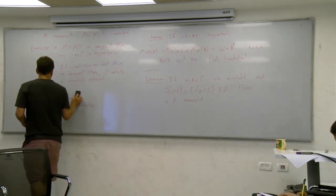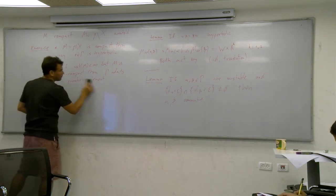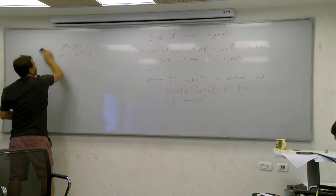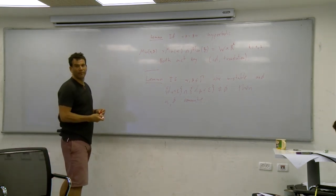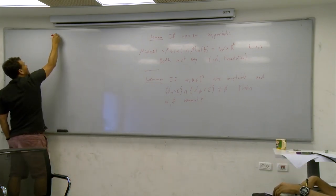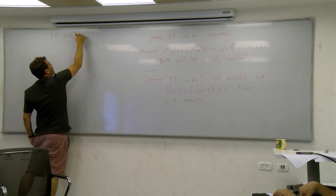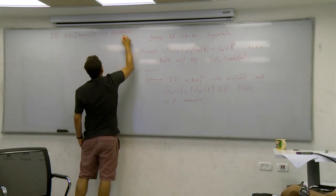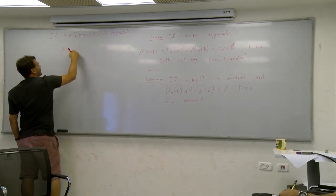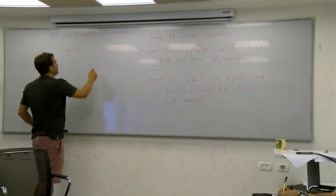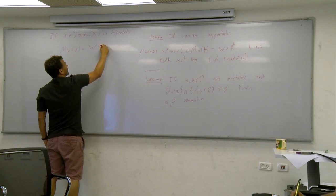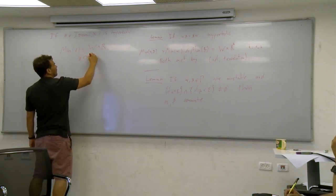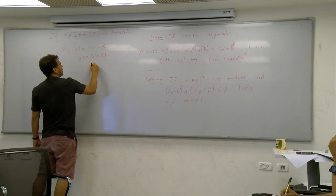Why? Recall how a hyperbolic element acts. If gamma is hyperbolic, then Min(gamma) is a totally geodesic submanifold — a union of geodesics — of the form W × R. Gamma acts on W × R by identity on W and translation on R. This R is the axis, and in non-positive curvature there may be many parallel axes, and you translate along the way.